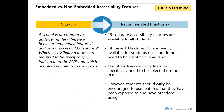The other four accessibility features specifically need to be selected on the PNP. These include answer masking, color contrast background font text, text-to-speech for math, and human reader/signer for math. The PNP needs to know that these features need to be uploaded to a student's test prior to testing.